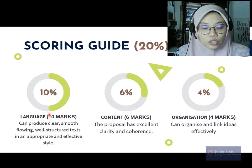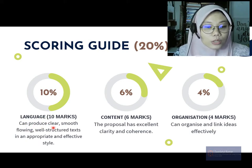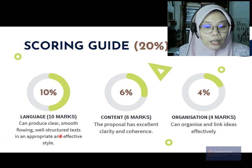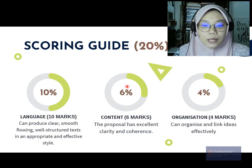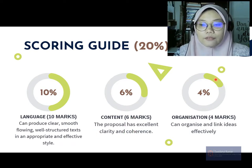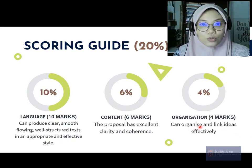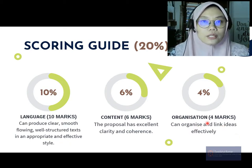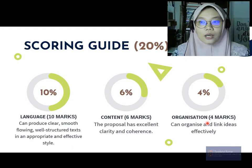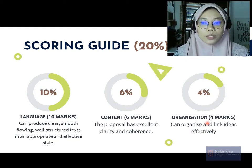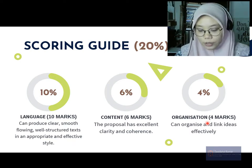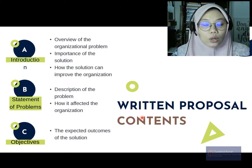Within that 20 percent, you will be graded 10 percent based on your language — producing clear, smooth-flowing, well-structured text in an appropriate and effective style. Six marks go to content — the proposal has excellent clarity and coherence. Finally, four marks are for organization — make sure you organize and link ideas effectively using cohesive devices, transitional signals or linkers, known in Malay as penanda wacana.